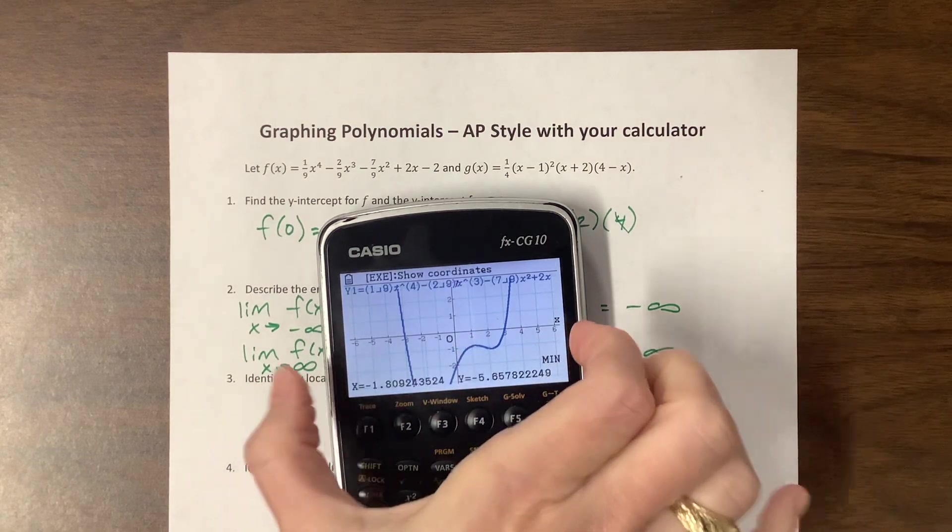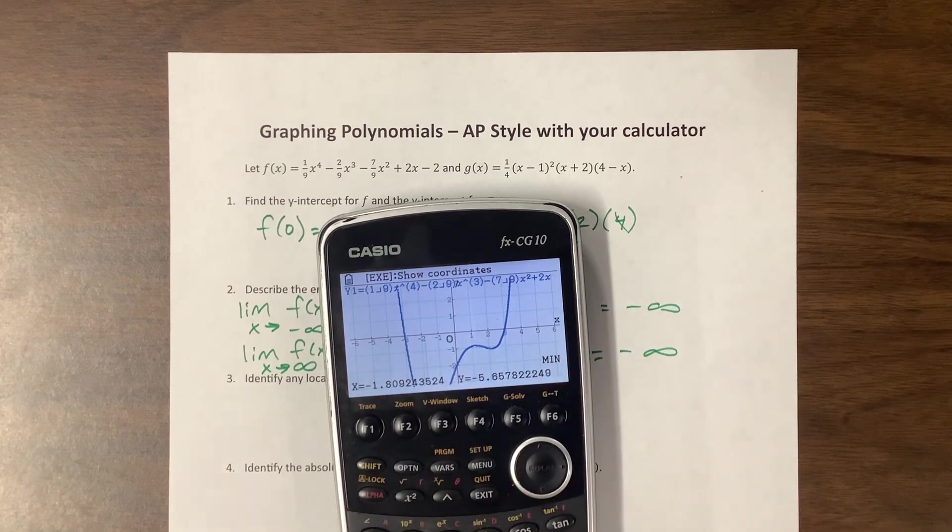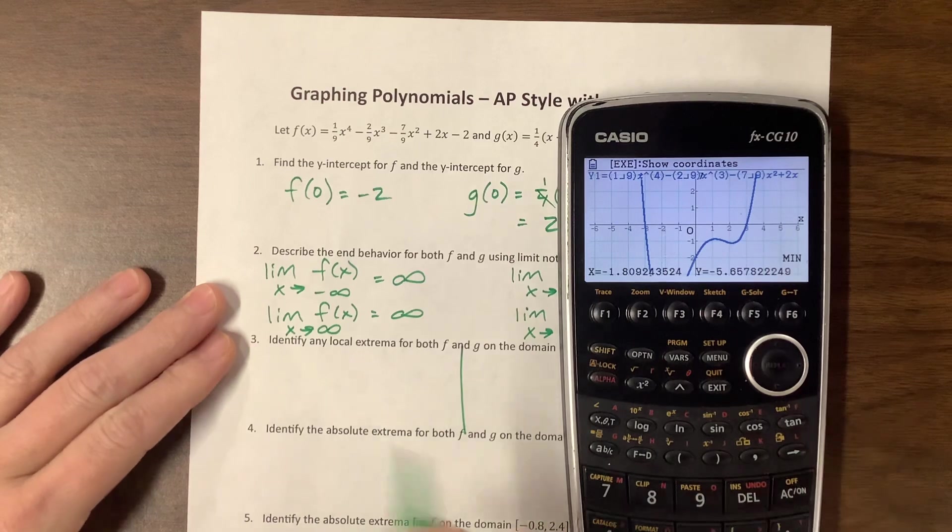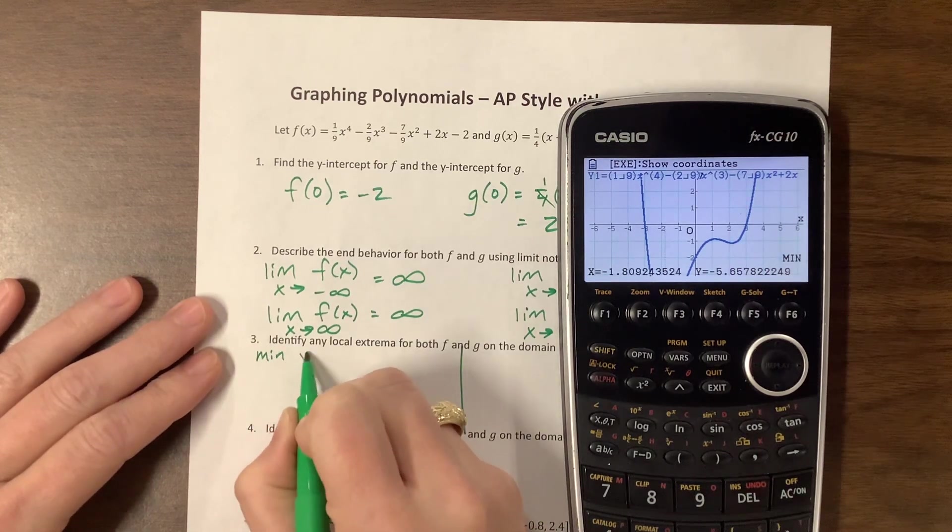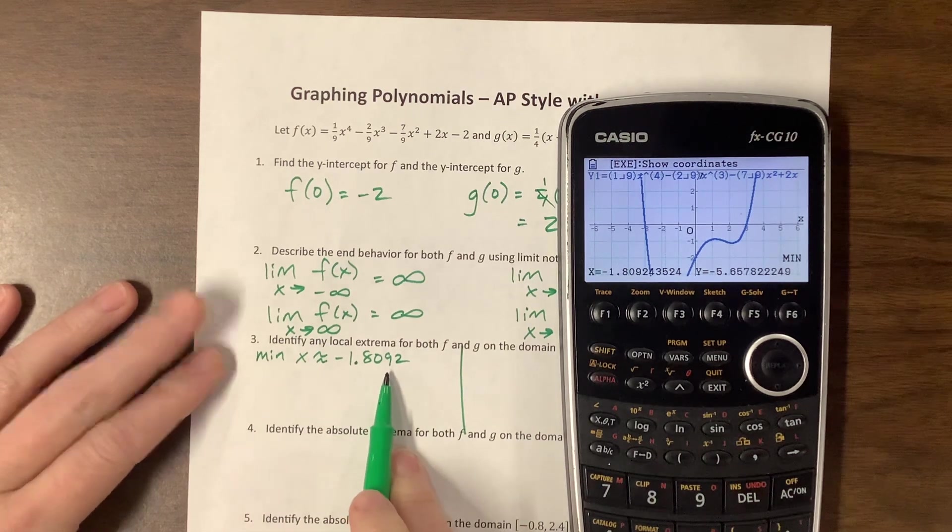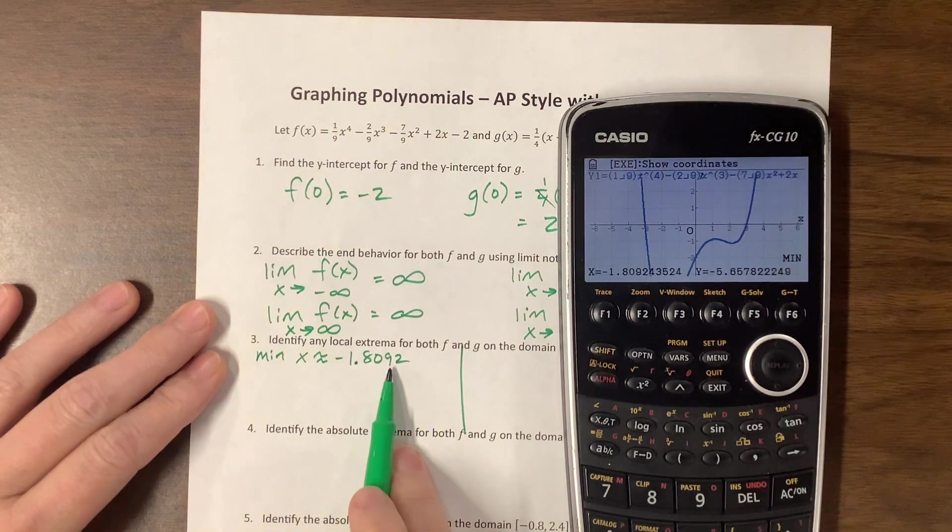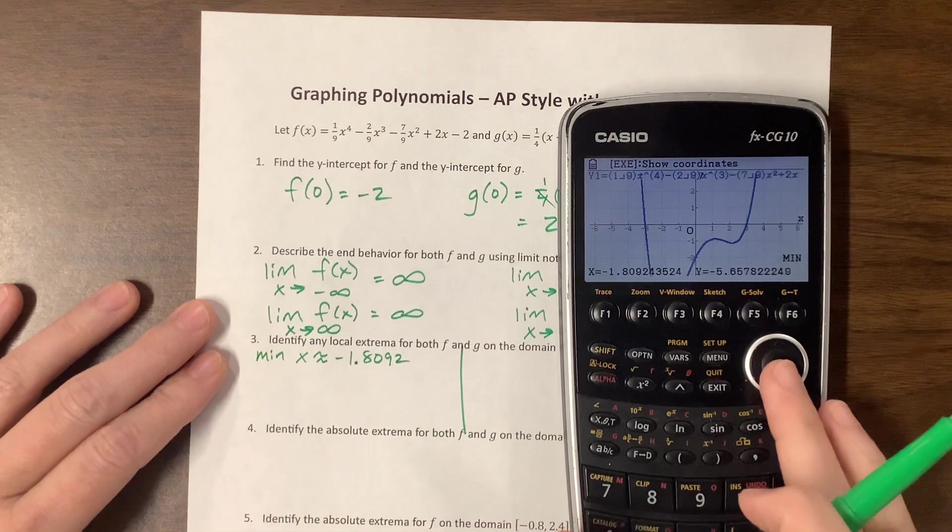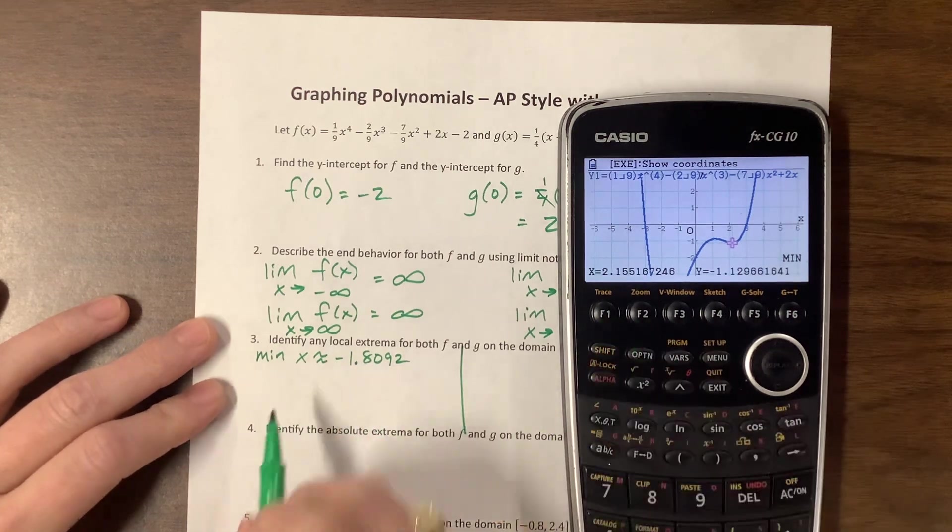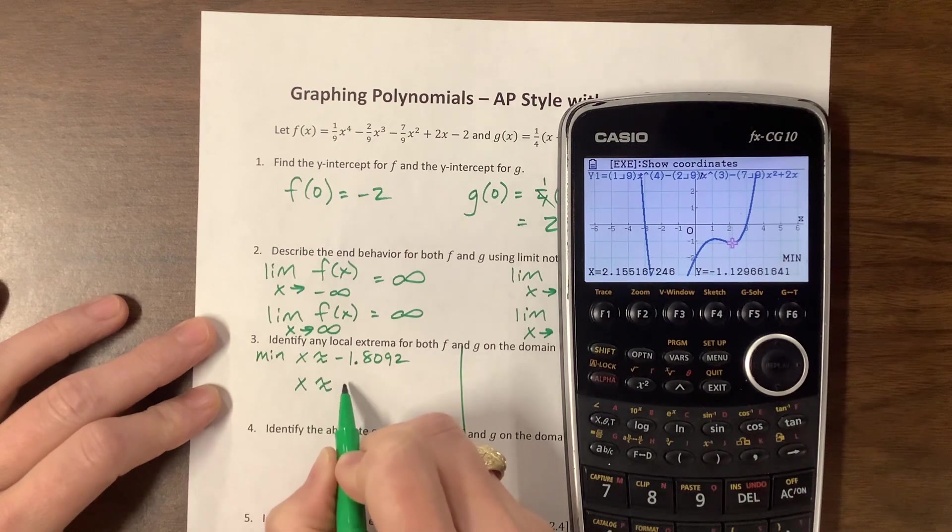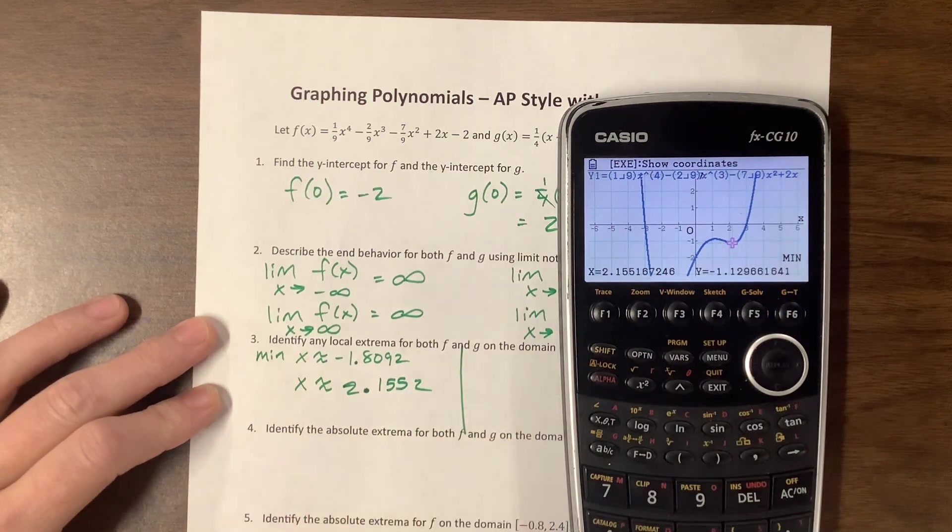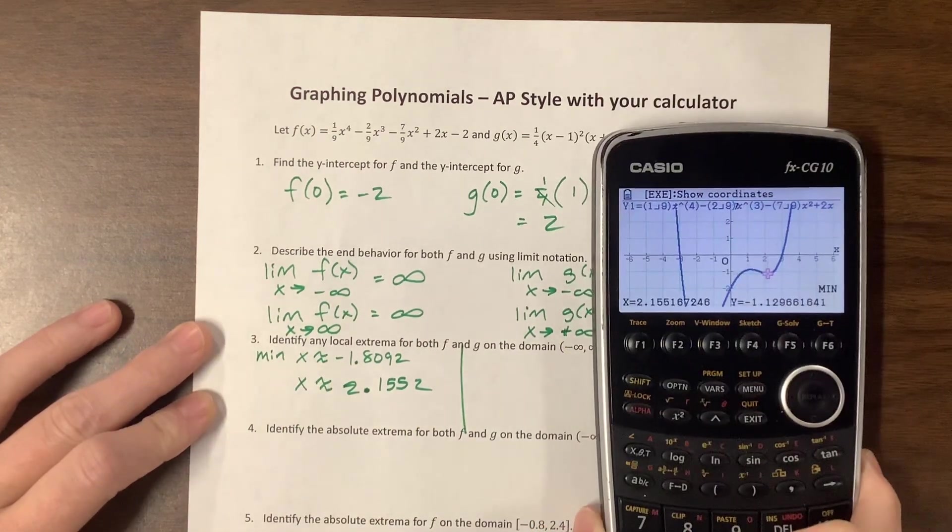It might be helpful to make my y values go a little lower. It seems that there's a local min there. It might be the absolute min. We can either just do g-solve and find minimums. If my window has the domain where that minimum will show up, it doesn't have to be on the screen. So let me draw a line. We'll do f on one side and g on the other. We have a minimum when x is approximately equal to negative 1.8092.